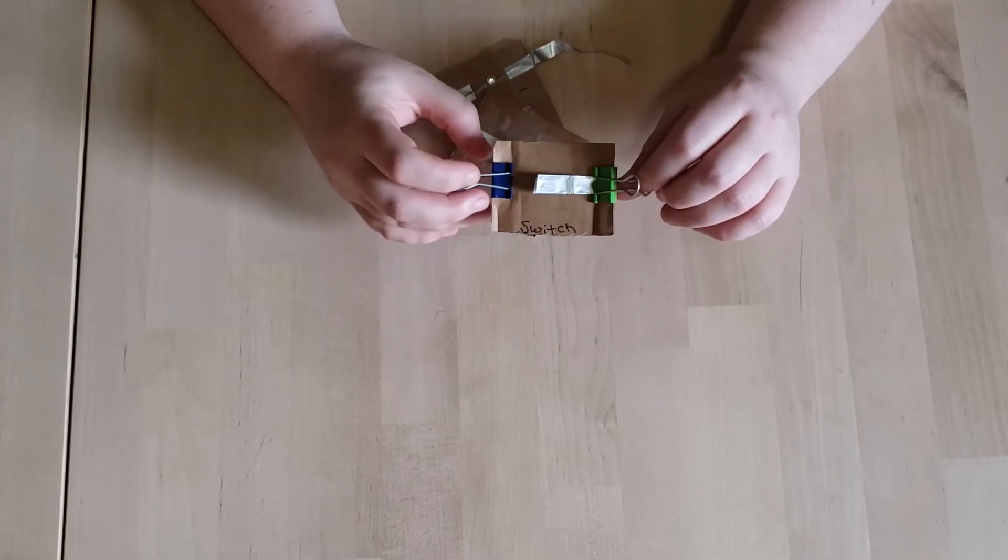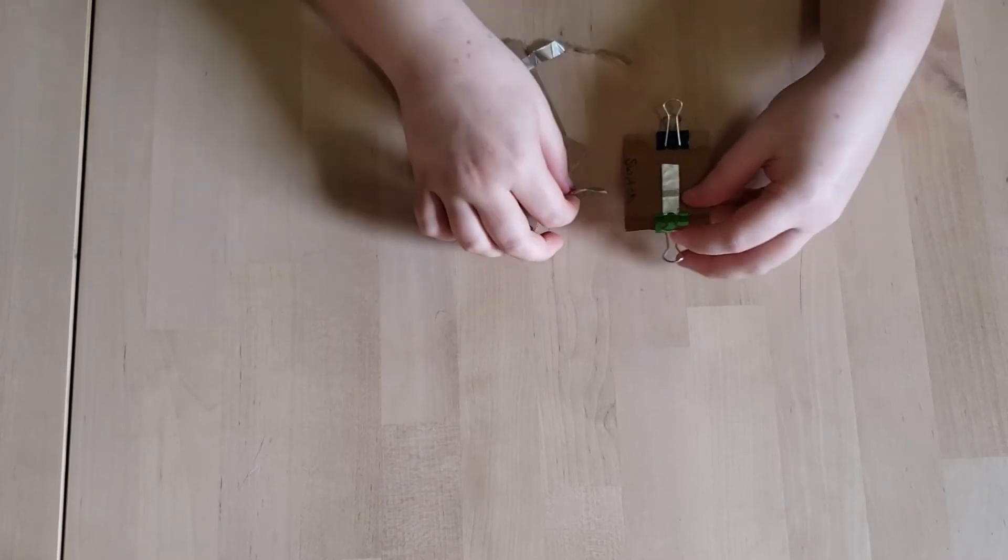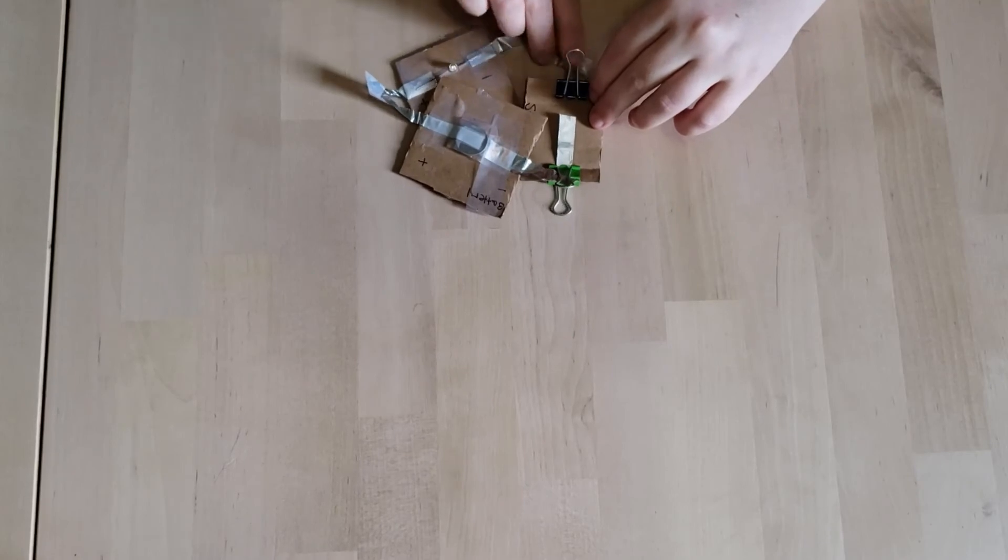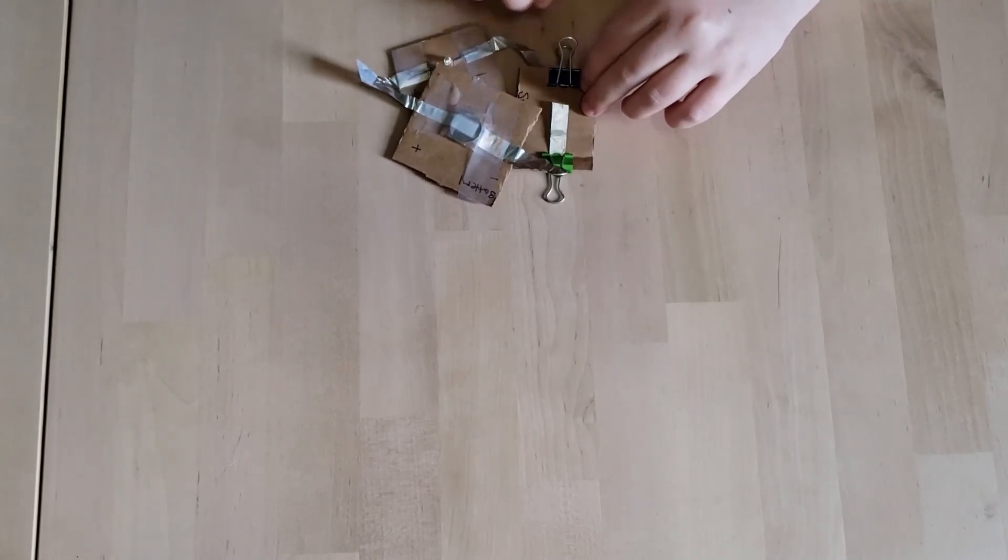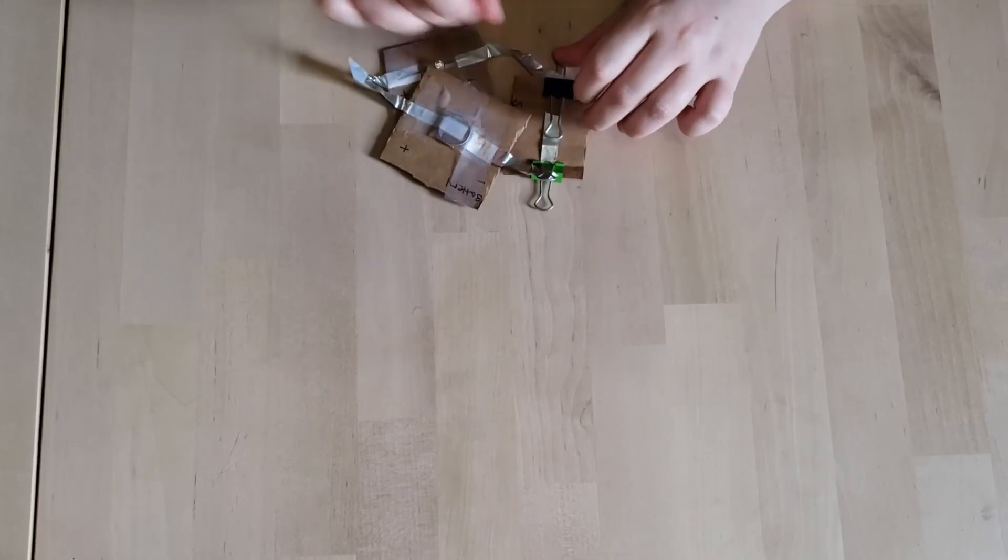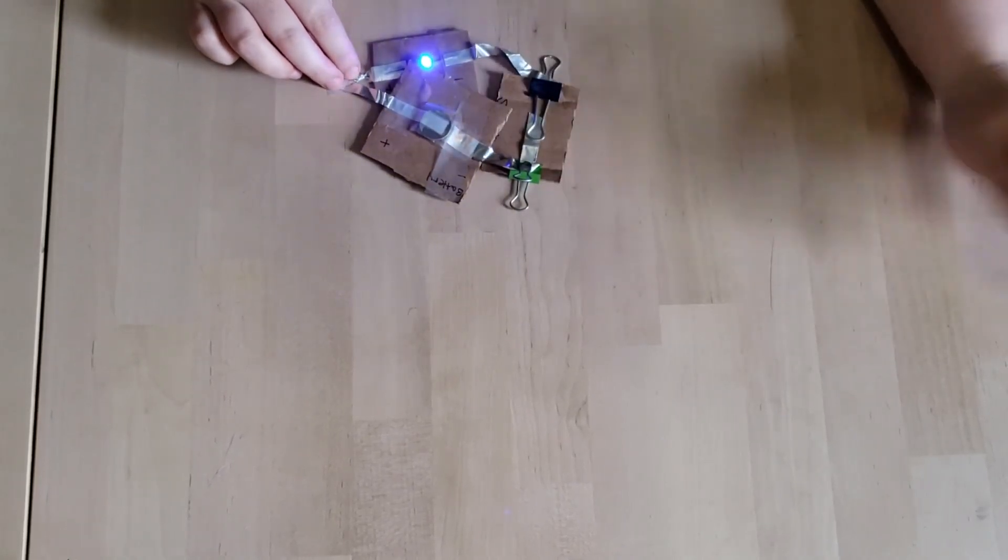For an extra challenge, I've made a switch using two binder clips and a short piece of tinfoil. You can add this into your circuit and you'll be able to control when you light up your light bulb by flicking the switch.